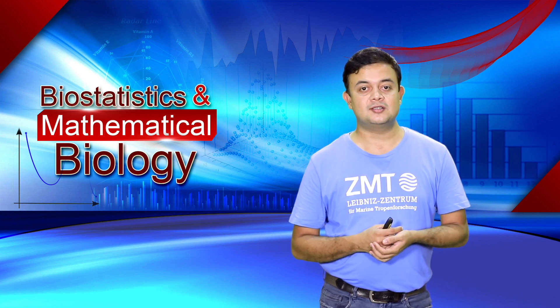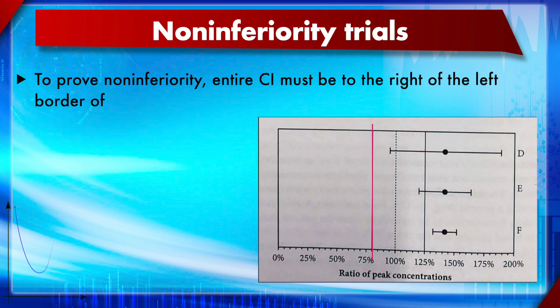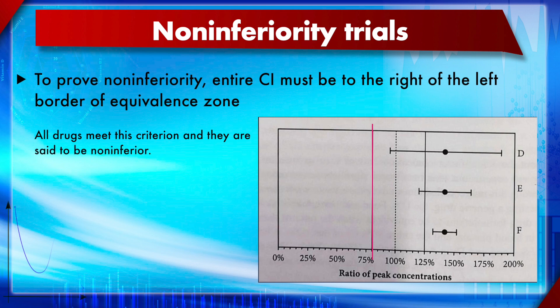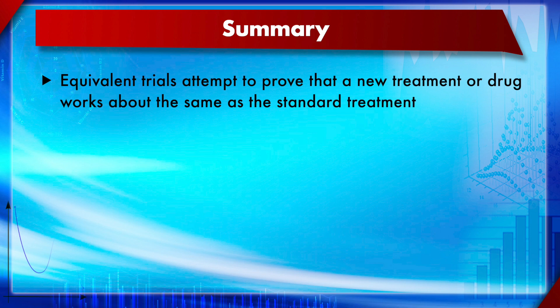Non-inferiority trials differ from equivalence trials. To prove equivalence, the entire CI range must be inside the equivalency zone. To prove non-inferiority, the entire CI must be to the right of the left border of the equivalence zone. Under that definition, all three drug candidates on the right can be stated as non-inferior to the standard drug.